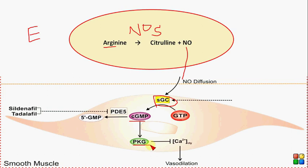Cyclic GMP activates protein kinase G. As a kinase, protein kinase G promotes phosphorylation — it phosphorylates the calcium channels, and when calcium channels are phosphorylated they are blocked. When these channels are blocked, there is no entry of calcium into the vascular smooth muscle, so calcium levels decrease. As calcium decreases, interaction of myosin light chain kinase to promote contraction decreases, the vascular smooth muscle relaxes, and vasodilation is promoted.